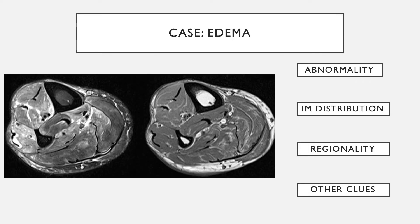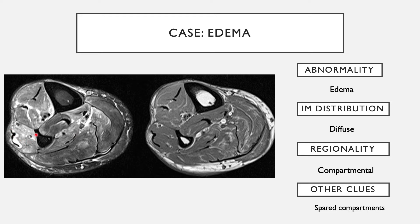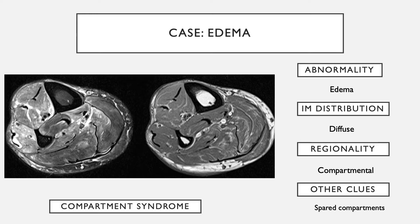In another case of edema, the intramuscular distribution is rather diffuse, with some peripheral intermuscular fluid and also diffuse edema within the muscles. The regionality is more compartmental — it is the anterior compartment that is really involved, while the posterior compartment is fairly minimal. The gastrocnemius compartment is also spared. With one compartment involved and other compartments less involved or spared, this is consistent with compartment syndrome.